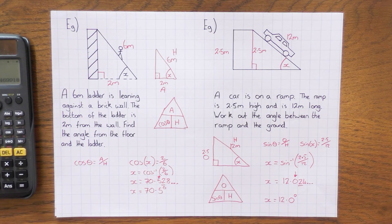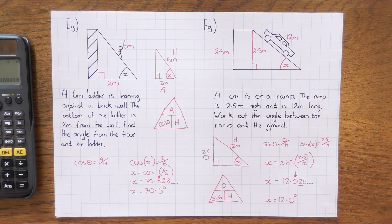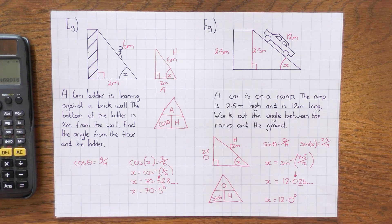There we go — missing angles using trigonometry. Hopefully that helps. Just be careful labelling your triangles, make sure you pick the right function: sine, cos, or tan. Make sure you close your brackets when using the inverse, so you don't run into any problems, and be careful when you round your answers. Thanks for watching.